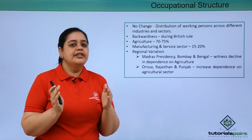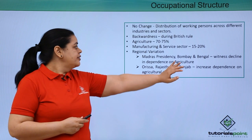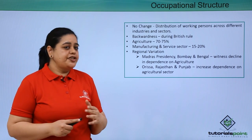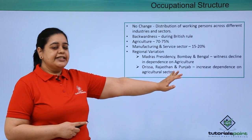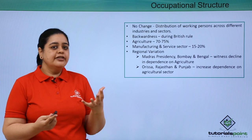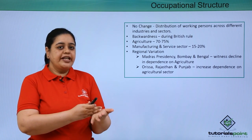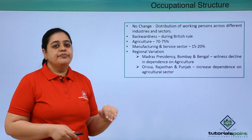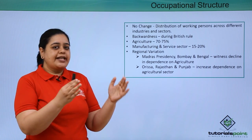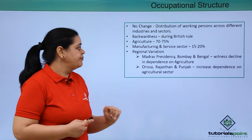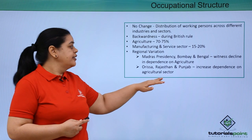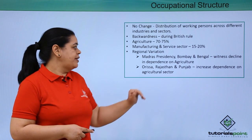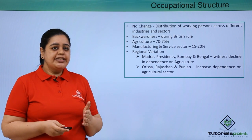Some improvement and regional variation was observed. The Madras presidency — which is now Tamil Nadu, Karnataka, Kerala, and parts of Andhra Pradesh — saw some industries growing, with people shifting from agriculture to those industries. The same happened with Bombay and Bengal. As people moved from agriculture to industry in those areas, there was a decline in dependence on agriculture. However, Orissa, Rajasthan, and Punjab saw an increasing dependency on agriculture.